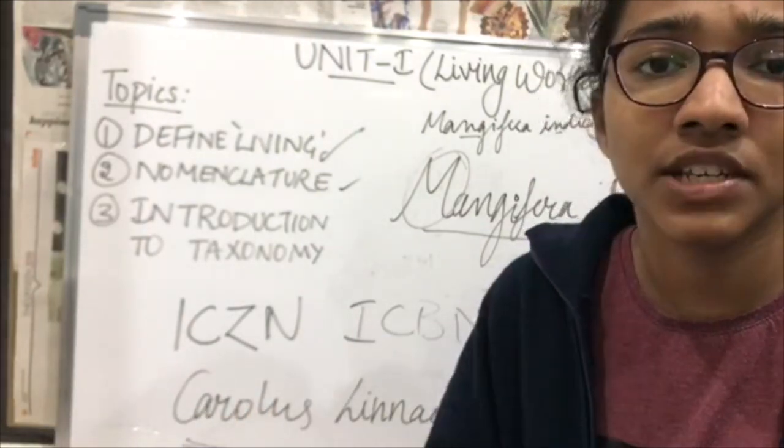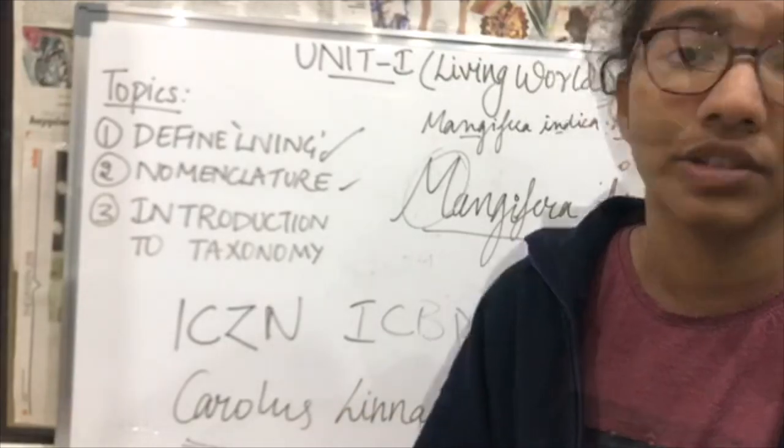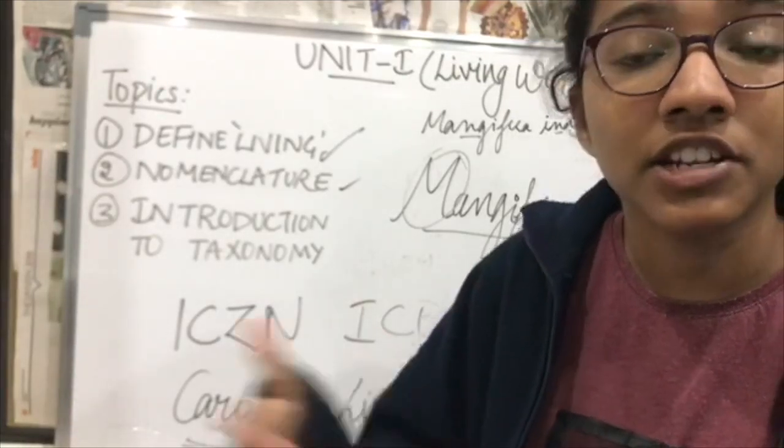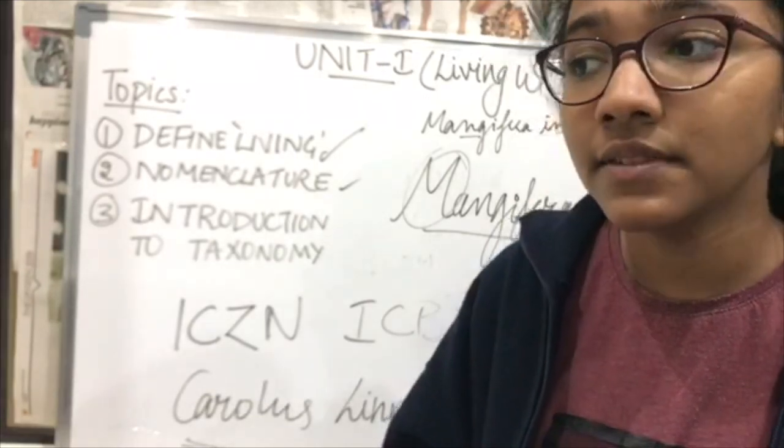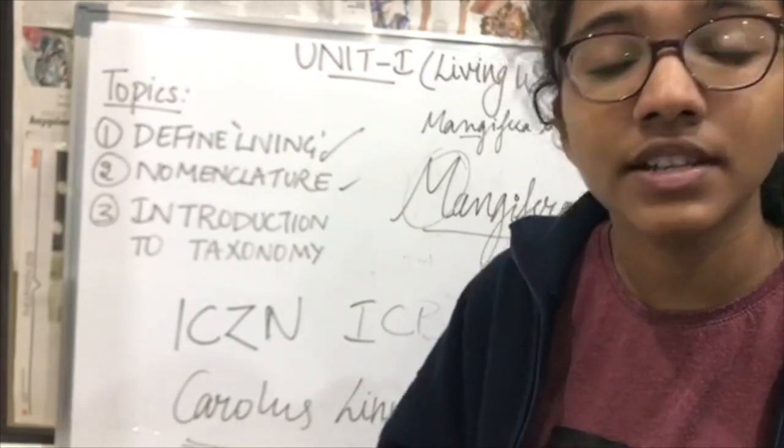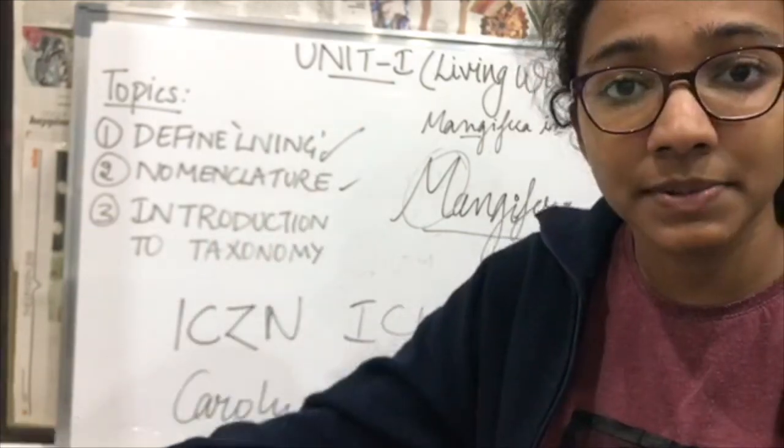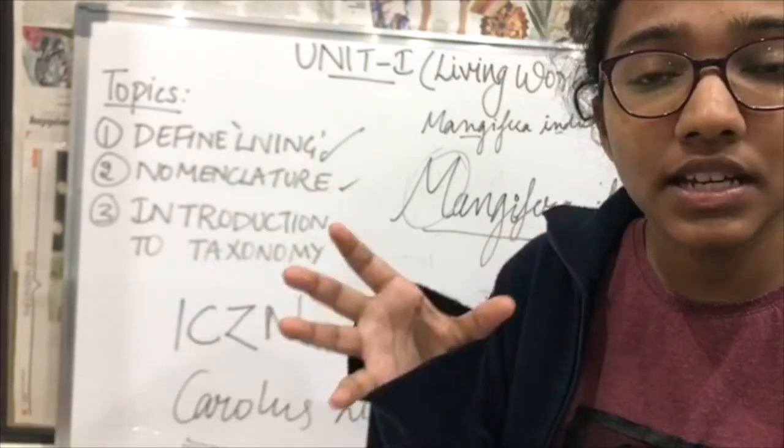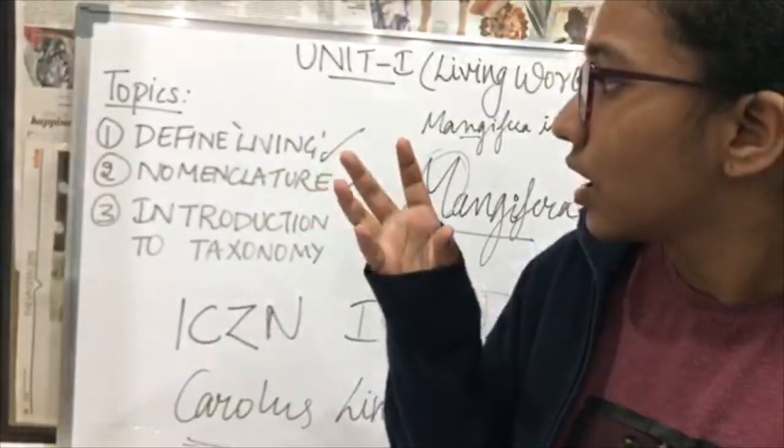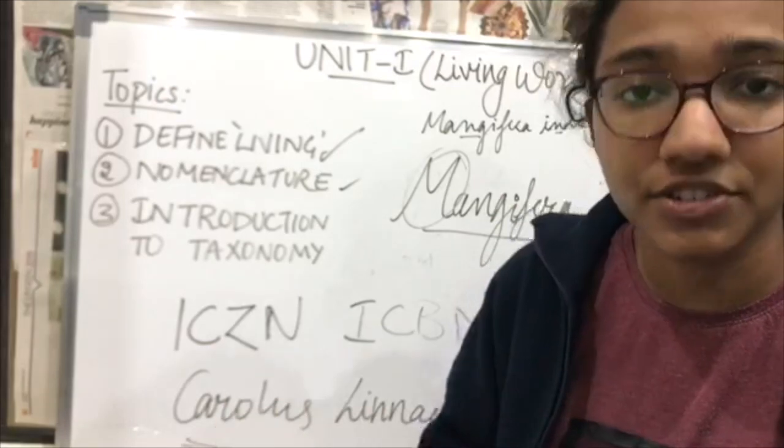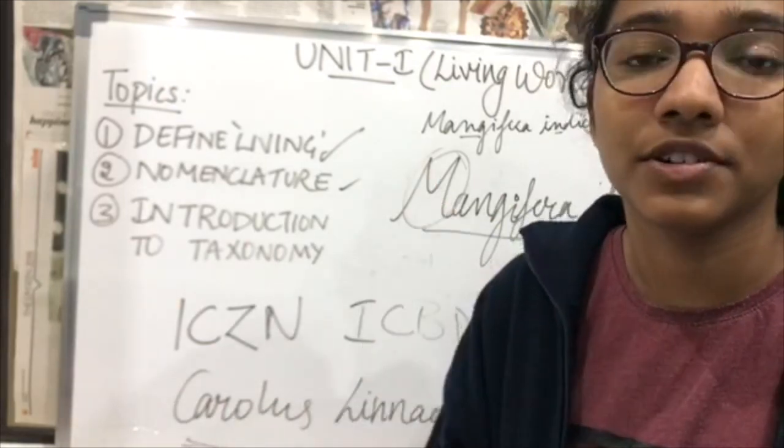When you talk about systematics, it includes the interaction between organisms. The very basis of evolution is the interaction between different organisms throughout the geological period of time. So basically, systematics is also known as the basis for evolutionary relationships. This is a very important point.